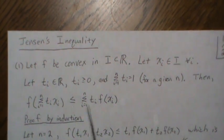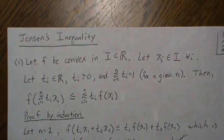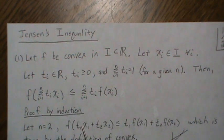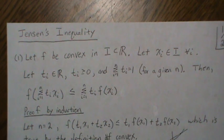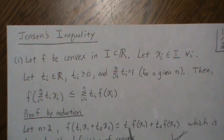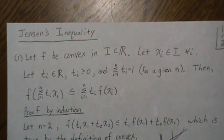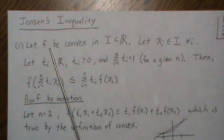Then Jensen's inequality states that F of the sum of t_i * x_i is less than or equal to the sum of t_i * F(x_i). We'll prove this by induction. For the base case n=2, we need to show F(t1*x1 + t2*x2) ≤ t1*F(x1) + t2*F(x2), which is true by the definition of convex functions.